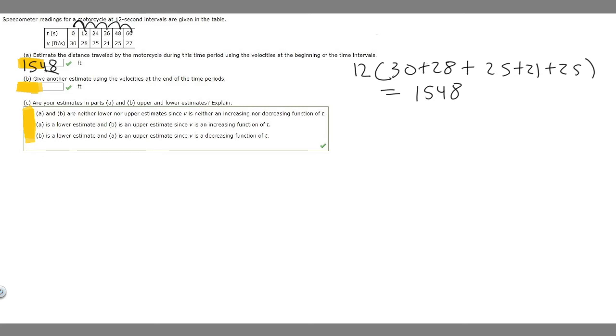For the next one, it says give another estimate using the velocities at the end of the time periods. So instead of using the numbers in the beginning like we did for the first one, we're going to use the numbers at the end. So we go one time interval, this is going to be the end of the interval. We're going to do 12 times 28 plus 25 plus 21 plus 25 plus 27.